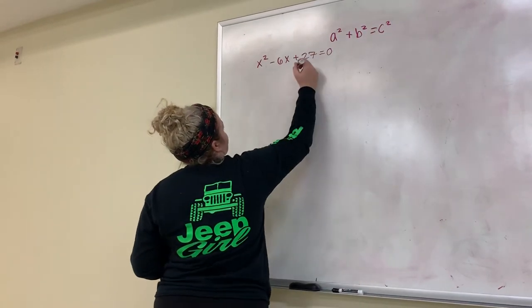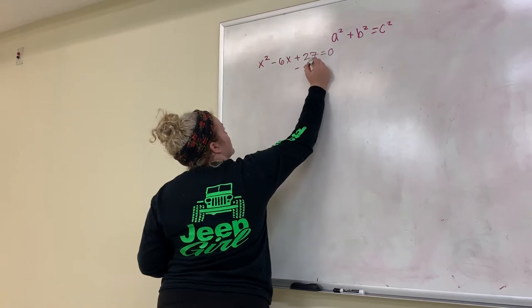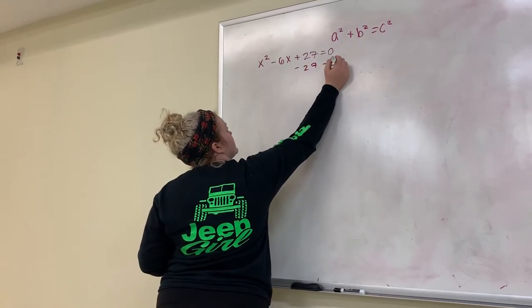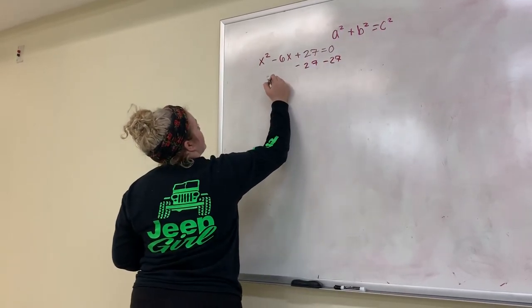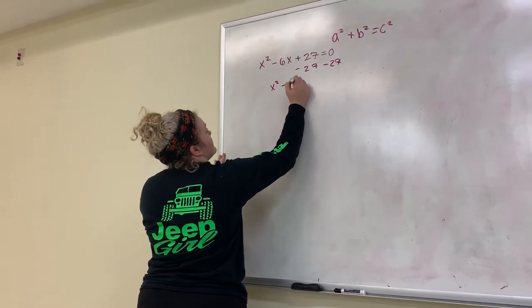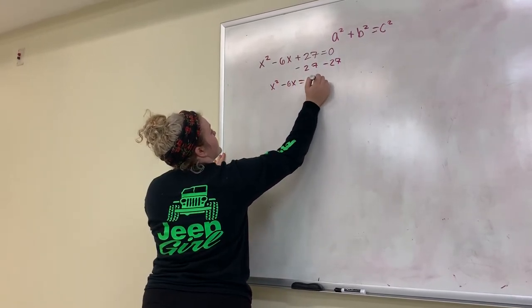So what we're going to do for that is I'm going to subtract 27 from both sides so that it is x squared minus 6x equals negative 27.